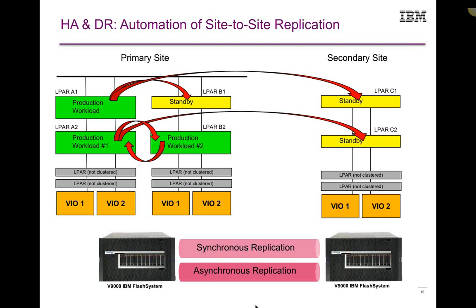I purposely set up standby LPARs skinny, because if those standby LPARs are not going to be doing anything — just sitting there waiting to take over — you don't necessarily have to consume all those licenses. I might need 10 processors worth of processing power for A1, but if B1 is just sitting there not doing anything, maybe set it up with only one. Same thing with C1. Instead of paying for a total of 30 licenses for that cluster, I can pay for 10 and minimize my license costs.